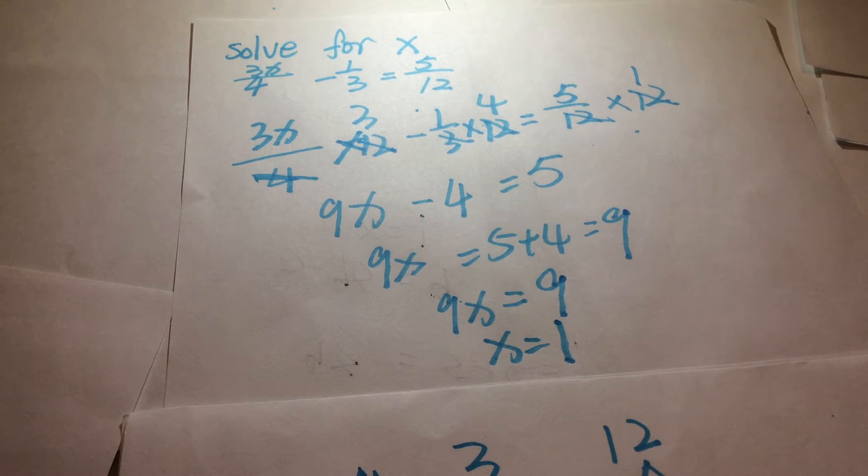Then divide by the coefficient of the unknown number. We get the number we're trying to find, which here is x equals 1.